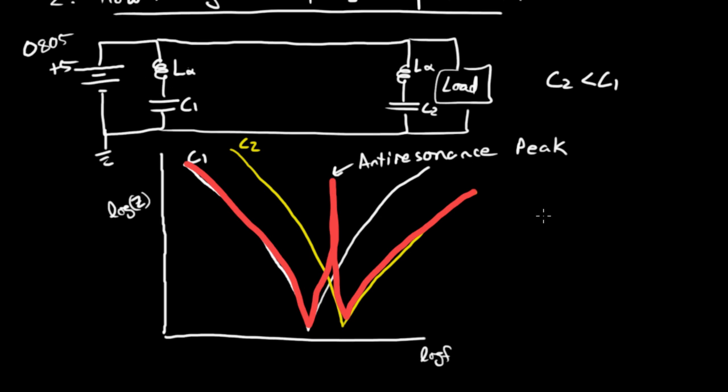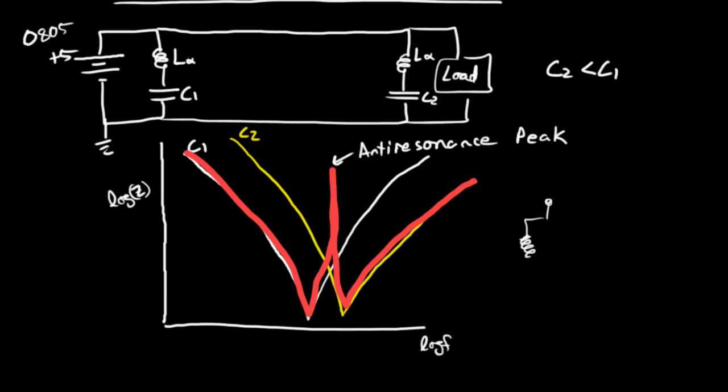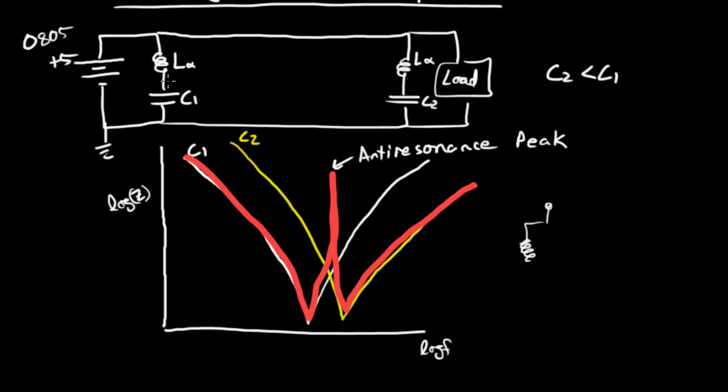So what you have is on the one side, you're operating above the frequency where this capacitor looks like a capacitor, and you're seeing the parasitic inductance. On the other side, this is C2.